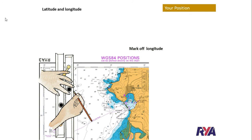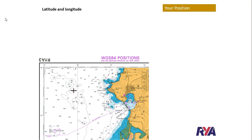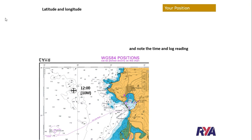We can do this using the parallel rules as shown here, or the Portland plotter. Once we have our position, we mark it as a fix with a circle around it, and we normally put the time and the log reading with that as well.